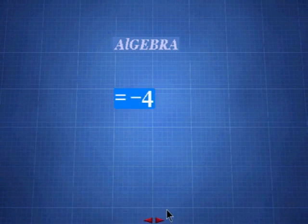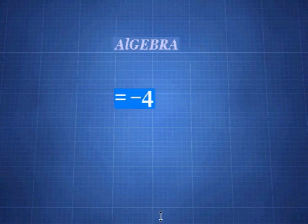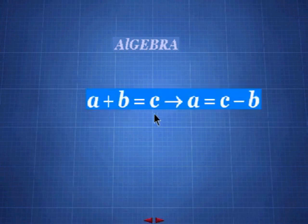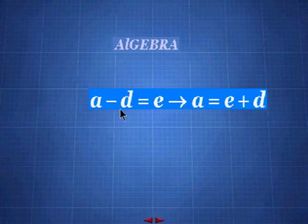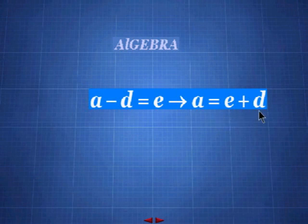The first procedure: any symbol or number can be moved to the other side by changing its sign — this is known as transposing. You take a number from one side and put it on the other side, and that changes its sign. For example, if a + b = c, moving b to the other side gives a = c − b. Starting with a negative: in a − d = e, moving d to the other side gives a = e + d, where d is now positive.